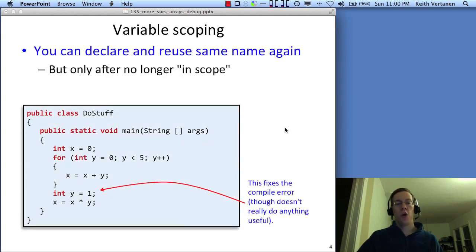How could we fix this? Well, we could fix this by declaring it after the for loop. Set it equal to one. This program will now compile and it doesn't do anything particularly sensible. Multiplying X by one isn't really going to change the value of X. But this program will now compile. And this is a demonstration of reusing the same variable name.